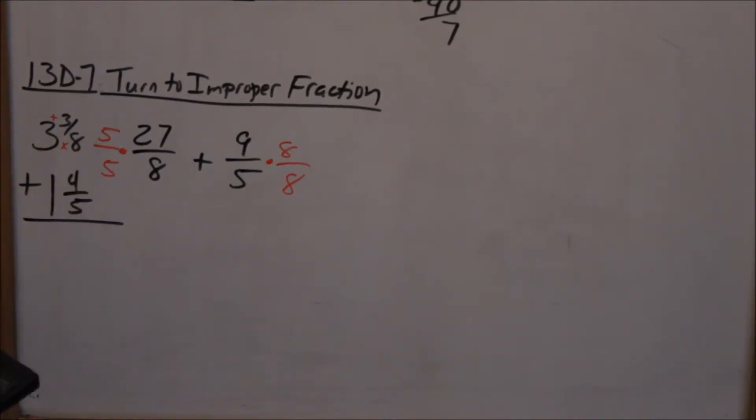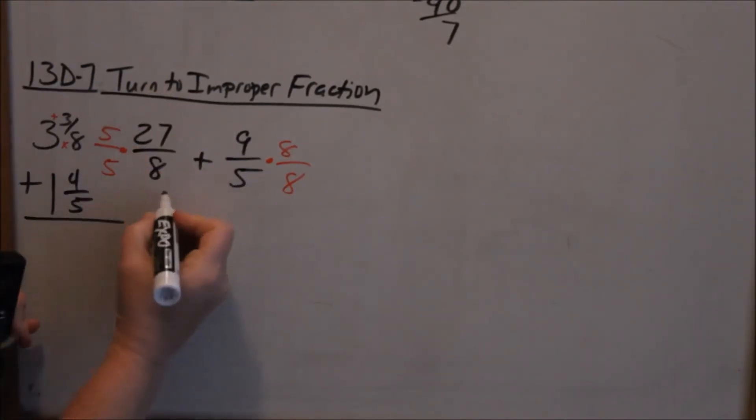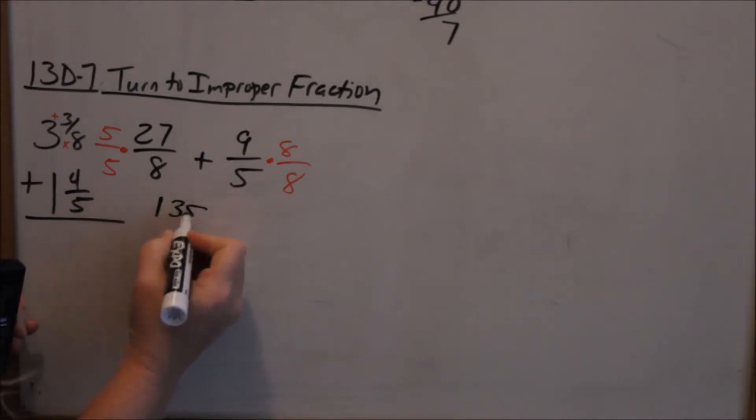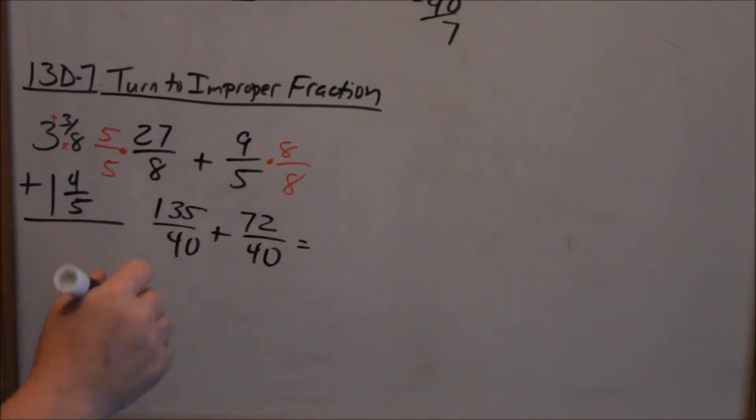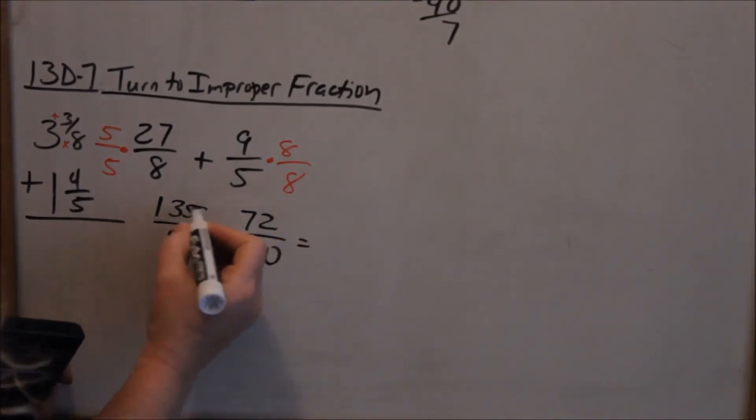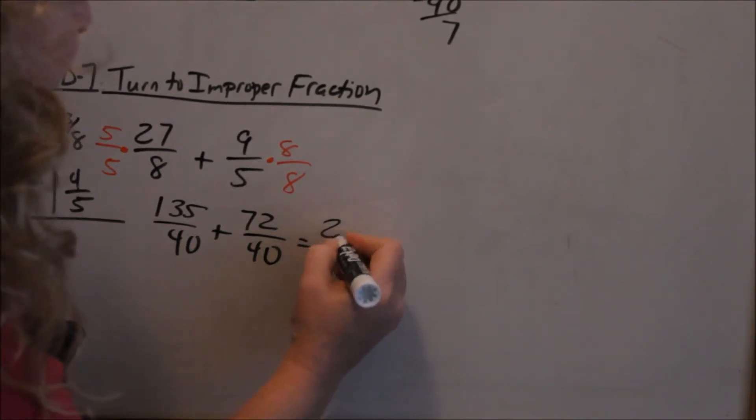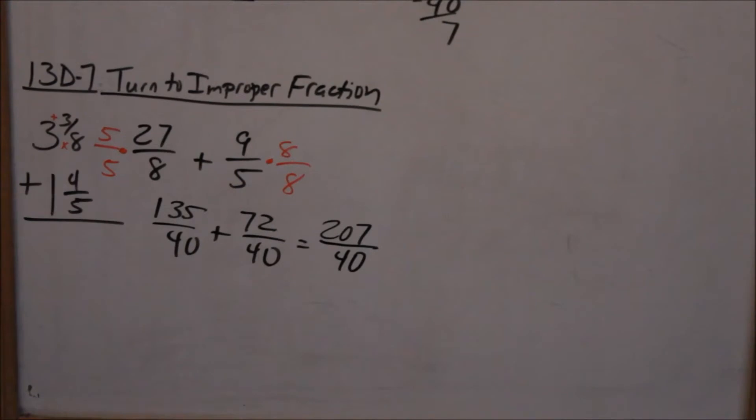So here, 5 times 27 is 135, 9 times 8 is 72 over 40. Now when you add fractions, you just add your numerators, that would be 135 plus 72, 207. Keep the same denominator. You do not add your denominators.